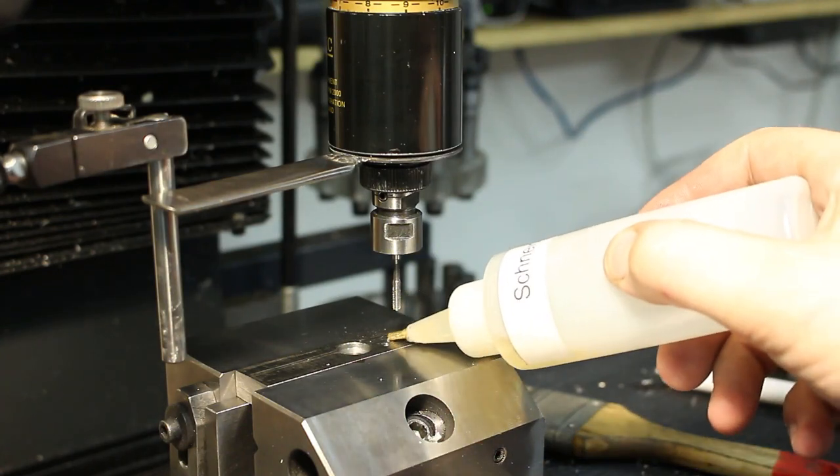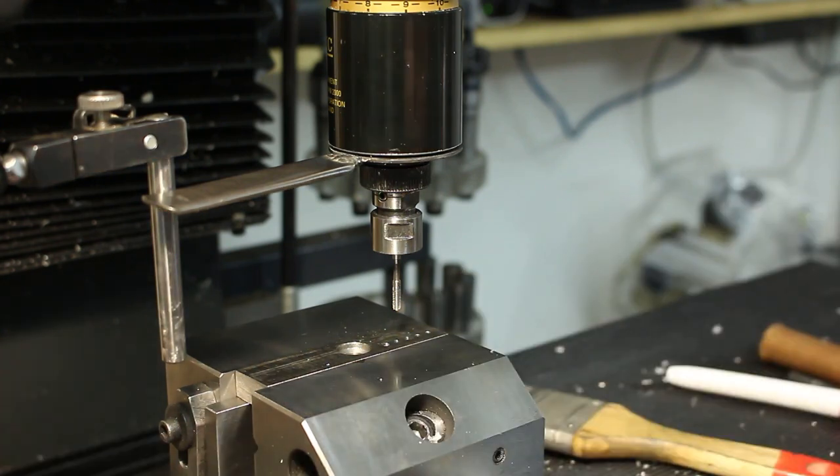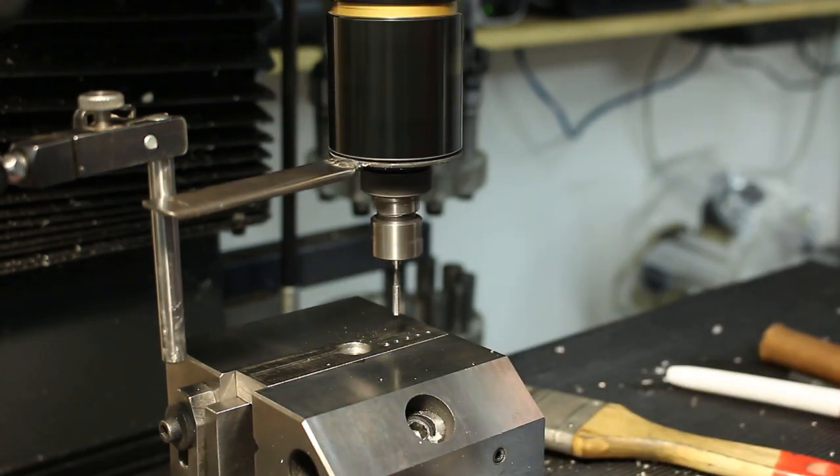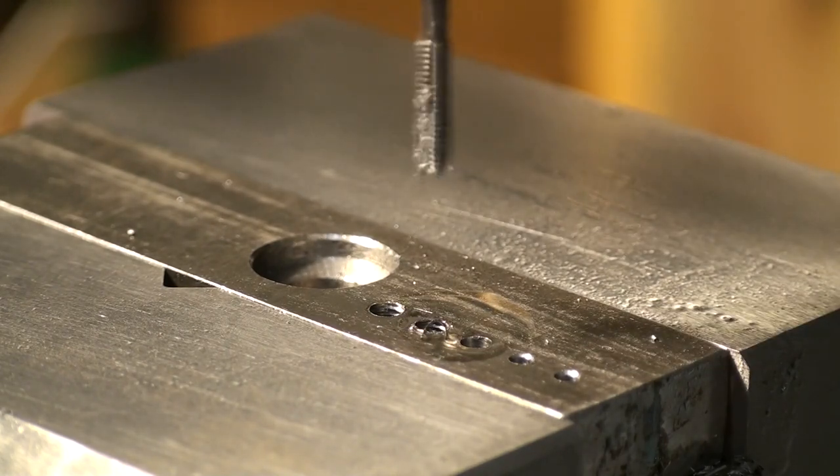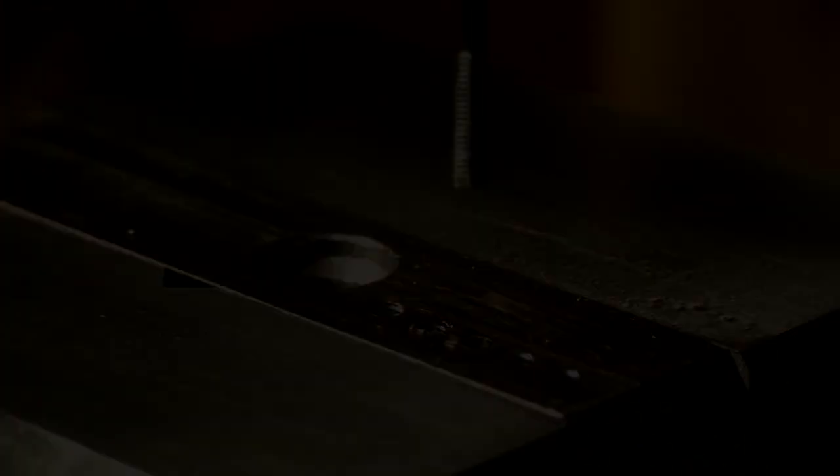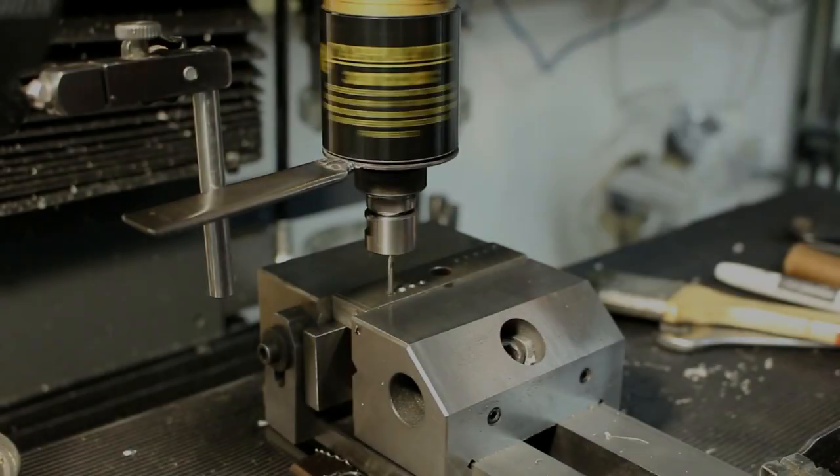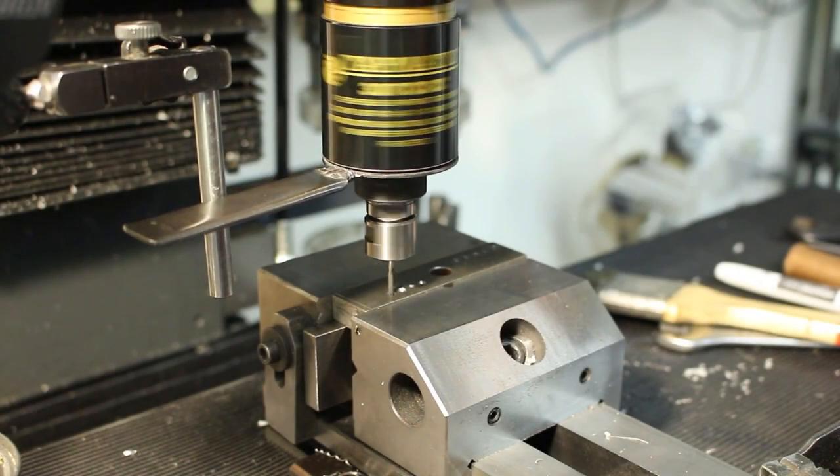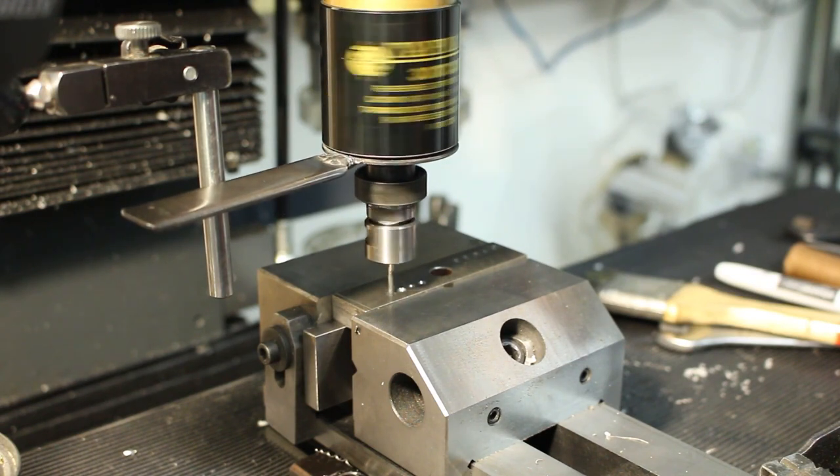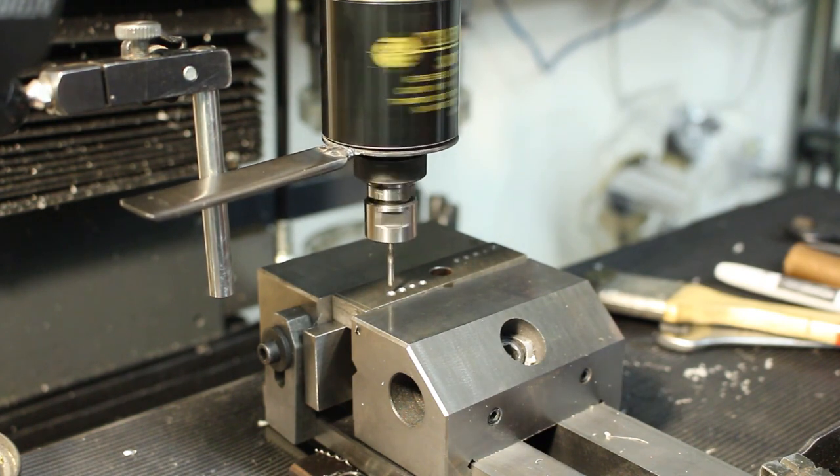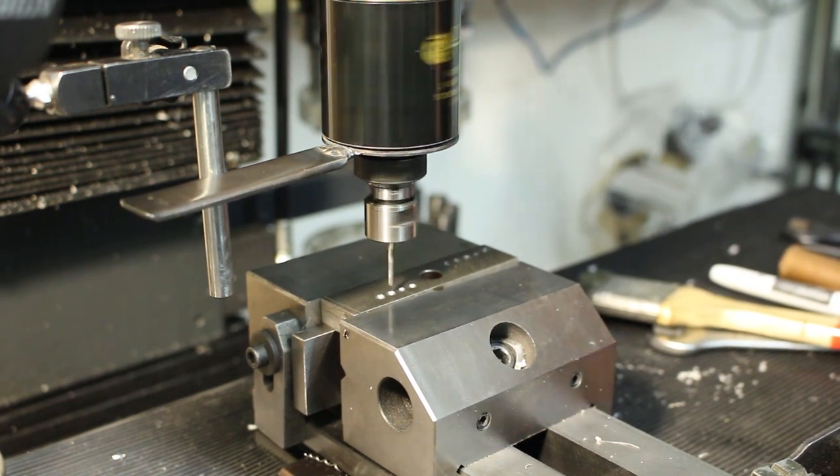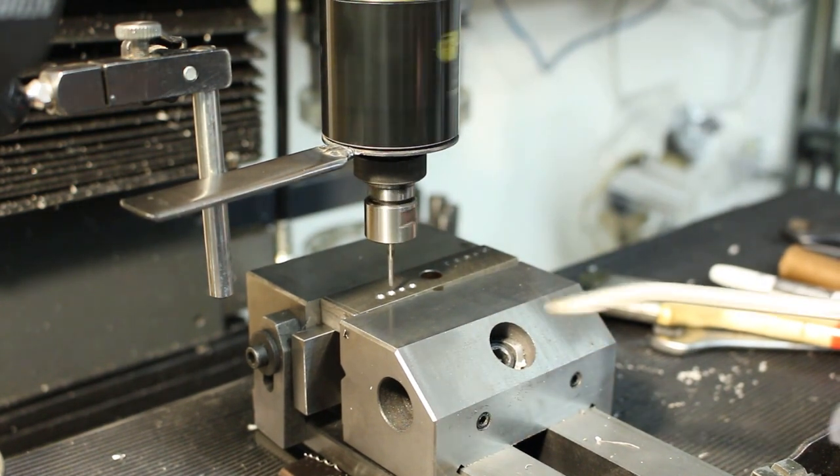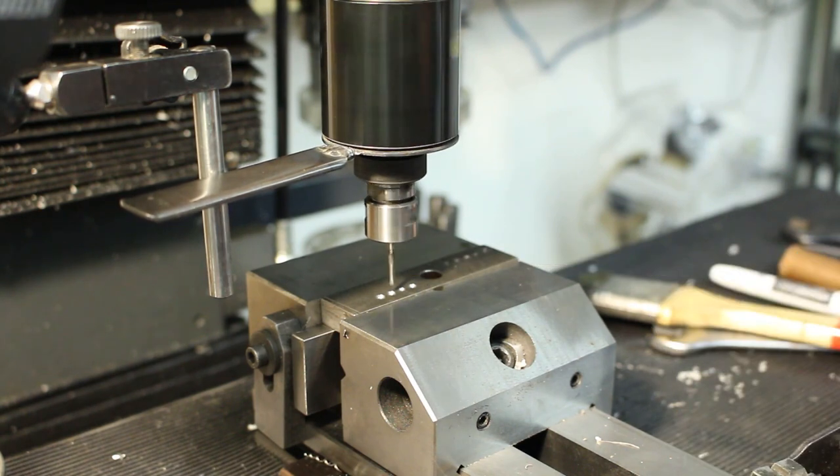So let's start out with something simple, something simple like M3 thread in O2 tool steel running at about 250 RPM, and this is not a problem at all. I change to an M2 tap here and I'm still tapping O2 tool steel, and this is also not a problem at all.